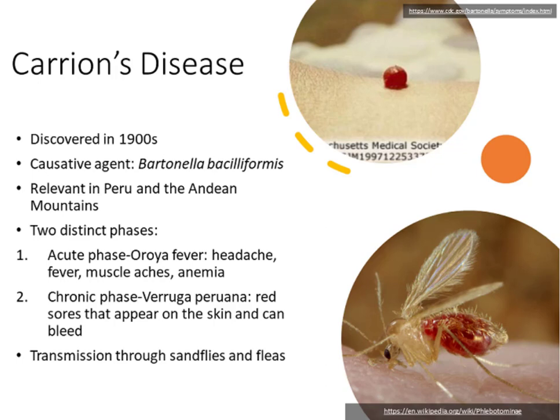The second most commonly known disease caused by Bartonella species is Carrion's disease, discovered in the 1900s, with causative agent Bartonella bacilliformis. This is most prevalent in Peru and in the Andean mountains. Interestingly, this disease has two distinct phases. The acute phase, known as Oroya fever, is characterized by headache, fever, muscle aches, and anemia. The chronic phase, known as Verruga peruana, involves red sores on the skin that can bleed. Transmission typically occurs through sand flies and fleas.